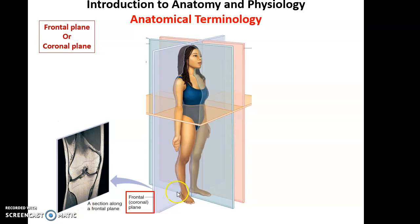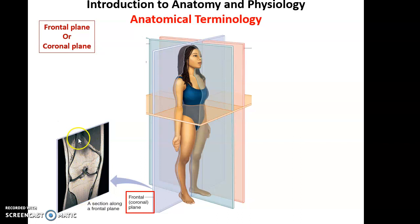We have different kinds of planes that cut the body in different orientations. The frontal plane, also known as the coronal plane, cuts through the body giving us a front piece and a back piece — an anterior and a posterior piece. Cutting a frontal plane through the knee gives us a frontal section of the knee joint.